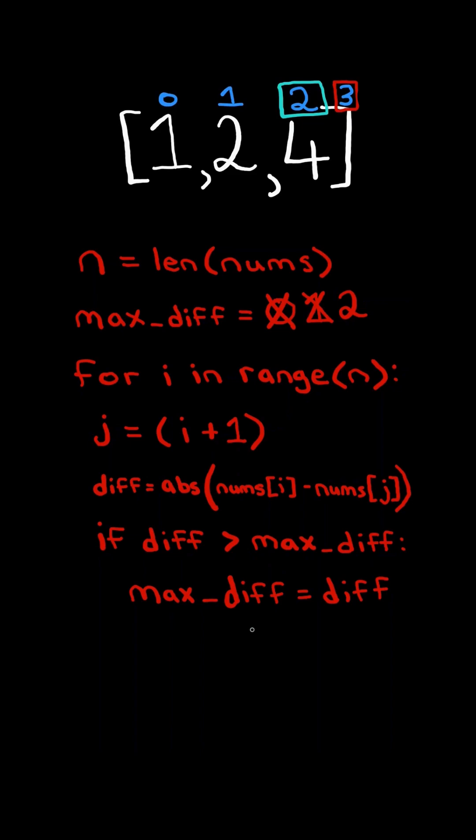We add 1 to get its neighboring index. But notice we are out of bounds. In order to get back to the start, we need to mod the neighboring index by n. In this case, 3 mod n equals 0. And this gives us the zeroth index. We then calculate the difference and update maxDifference.